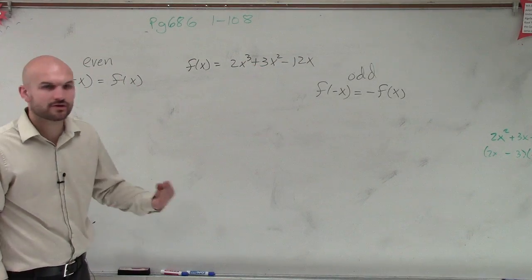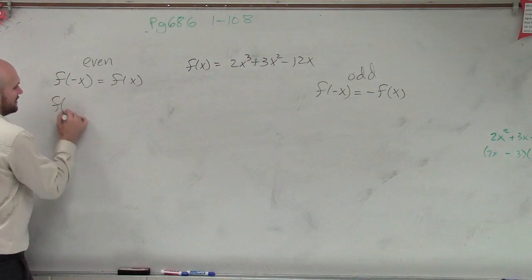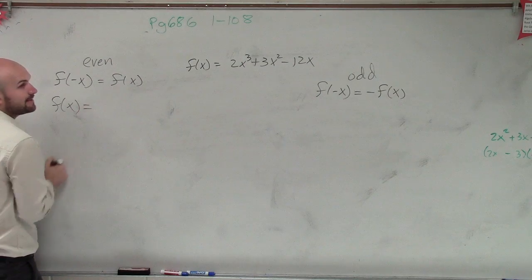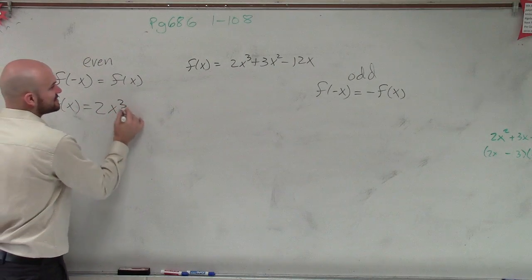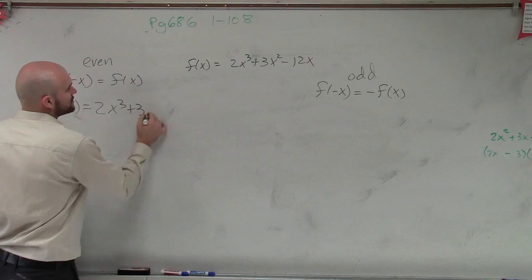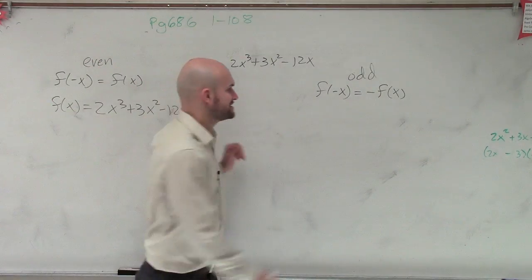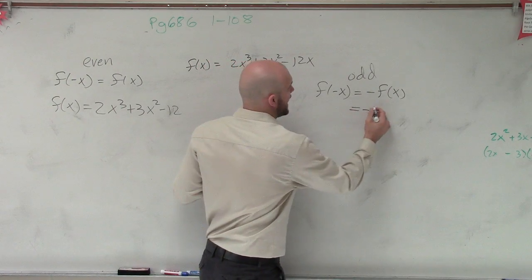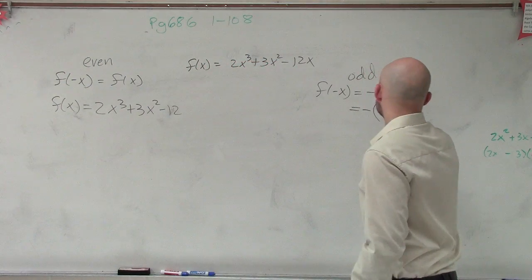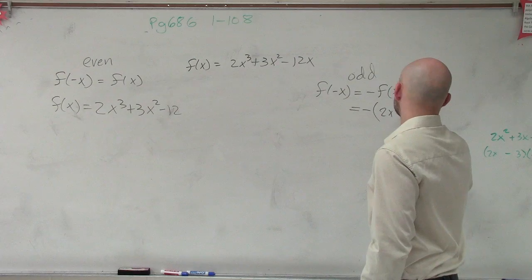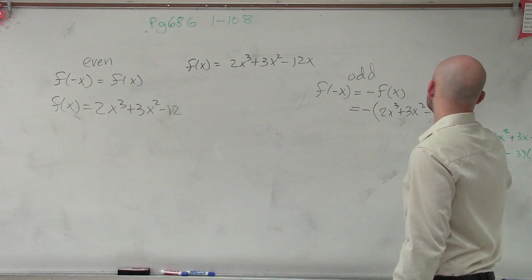So let's go back and review what is f of x. If I plug in f of negative x and I get back out f of x, I need to get 2x cubed plus 3x squared minus 12x. If I'm going to get negative f of x, negative f of x looks like this. The opposite of 2x cubed plus 3x squared minus 12x.